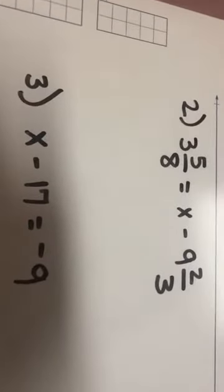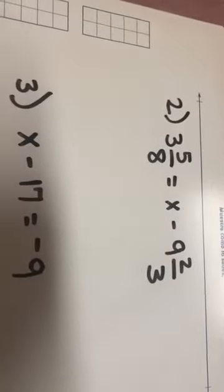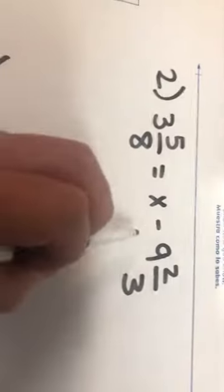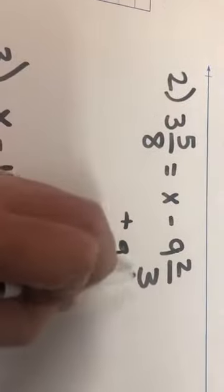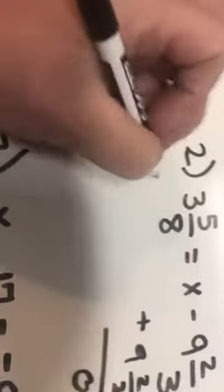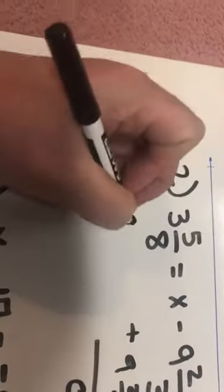Let's move on to the next one. Number two, 3 and 5 eighths equals x minus 9 and 2 thirds. So once again, I have to isolate the variable. This is a minus 9 and 2 thirds, so I'm going to add 9 and 2 thirds, and that's what's going to give me zero. I'm going to come over here, and I'm going to add 9 and 2 thirds.